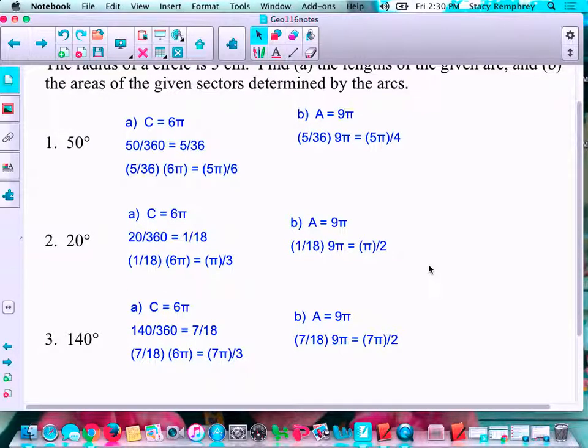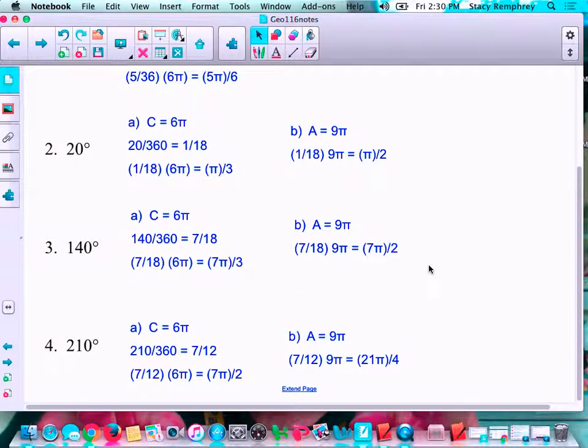Okay. The circumference and area of the entire circle never changes for each of these problems. But the fraction of the circle does change. So, I changed the fraction of the circle and got my answers here. So, π over 3 and π over 2. And I should have labeled these. All the circumferences should be labeled with centimeters, and all the areas should be labeled with centimeters squared. So, check your answers here. Push pause if you need to.